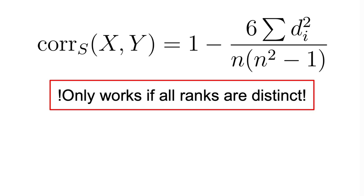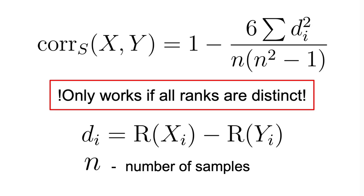the formula for the Spearman correlation simplifies and becomes the one displayed on the screen, where di represents the difference between the ranks of corresponding pairs of variables and n is the number of samples. And that's basically it guys,